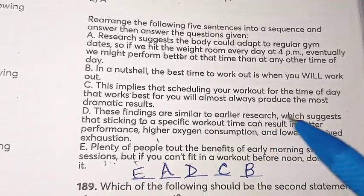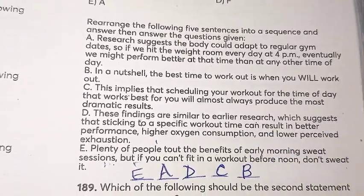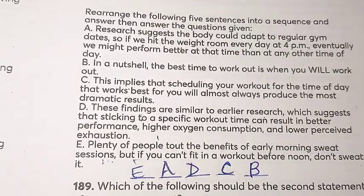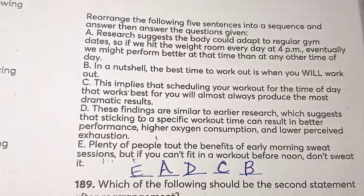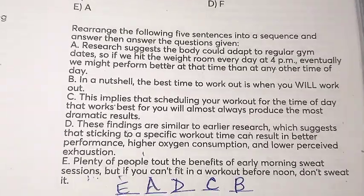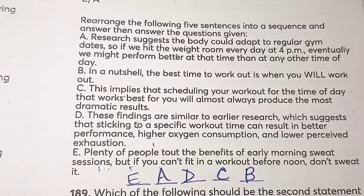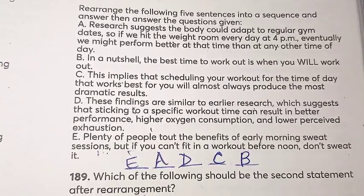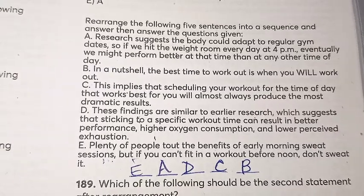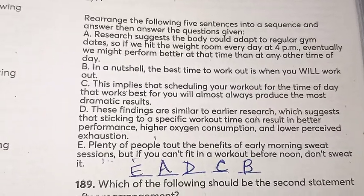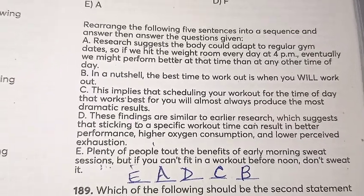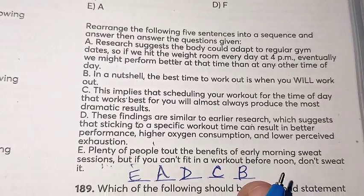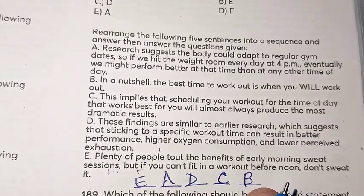After D comes C: 'this implies that scheduling your workout for the time of day will produce the most dramatic results,' and finally B: 'in a nutshell, the best time to work out is when you will work out.' So the final order is E-A-D-C-B. This is the way to solve para jumbles — just connect the sentences one by one, understand what the author wants to say, and arrange them accordingly. That's all for this video, thank you and have a nice day.